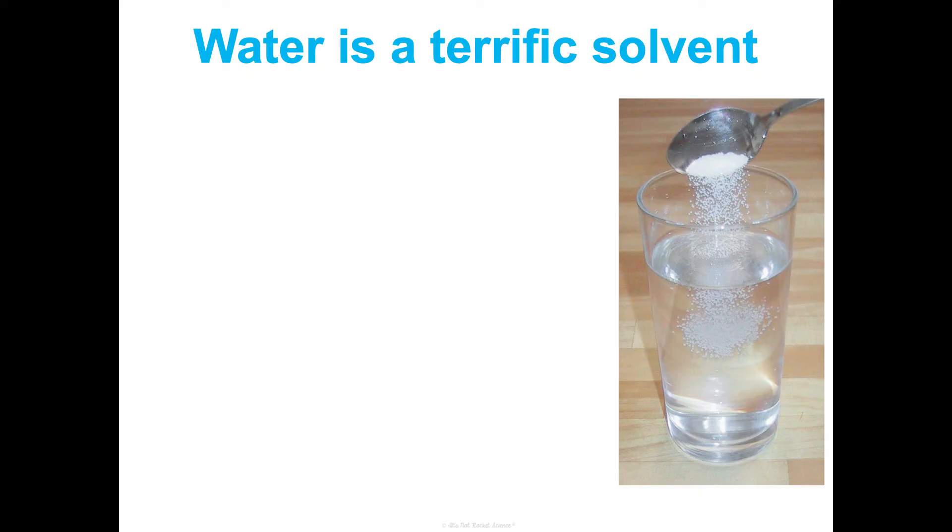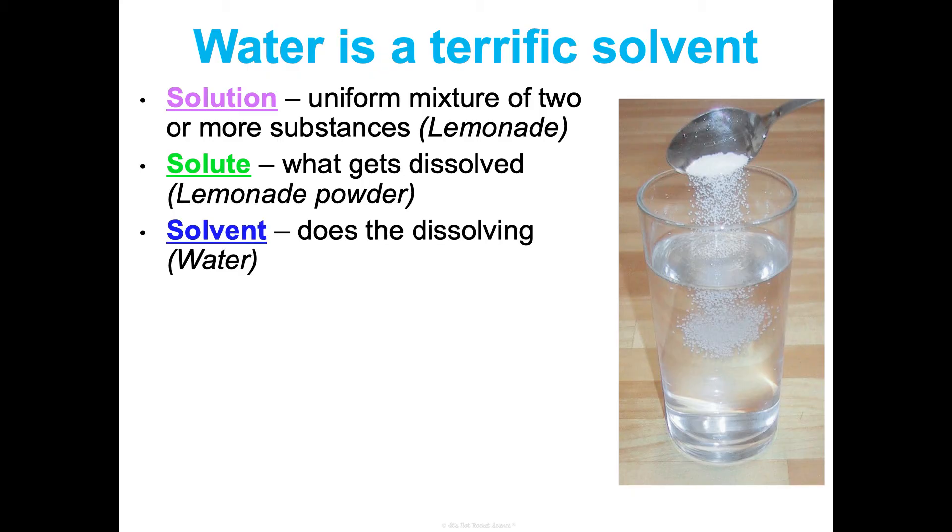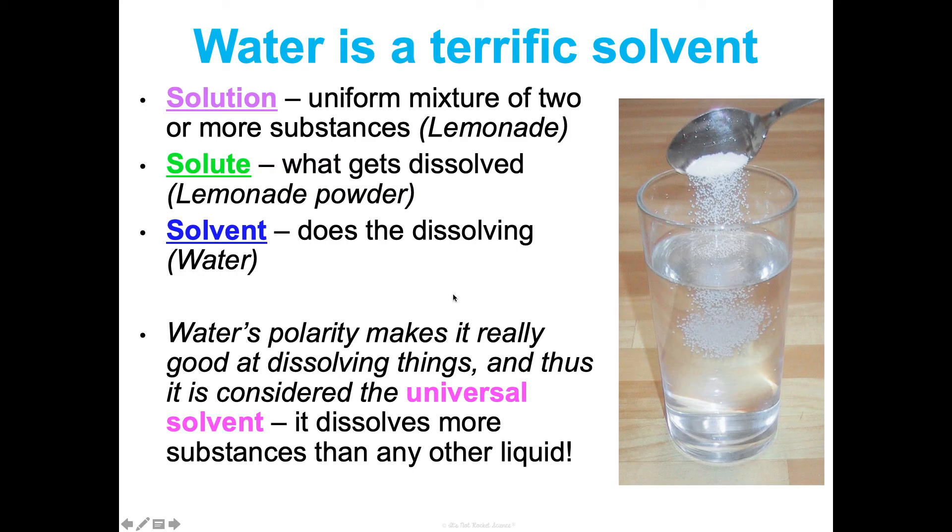And the last property of water I want to highlight, which is probably the most important, is that it's a terrific solvent. It's actually considered the universal solvent. So, what is a solvent? Well, to understand what a solvent is, I like to explain what a solution is. A solution is a uniform mixture of two or more substances. Think of lemonade. A solute is what gets dissolved. So, that would be like the lemonade powder. And then the solvent is what does the dissolving. So, that would be like water. Lemonade powder is a solute. When it gets dissolved in water, it makes a solution of lemonade. So, when we say water is a terrific solvent, it's really good at dissolving a lot of things. And that's because of its polarity. It's considered the universal solvent because it dissolves more substances than any other liquid, which is pretty cool.